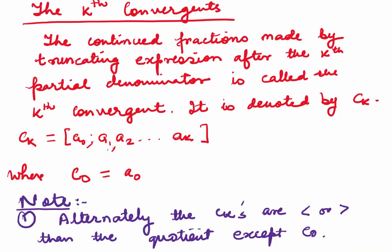Let's now look at a few things which we will be needing for solving the Diophantine equations. First, the kth convergent. The continued fractions made by truncating the expression after the kth partial denominator are called the kth convergent. It is denoted by Ck, which is Ck = [a0, a1, a2, ... ak], where C0 = a0.